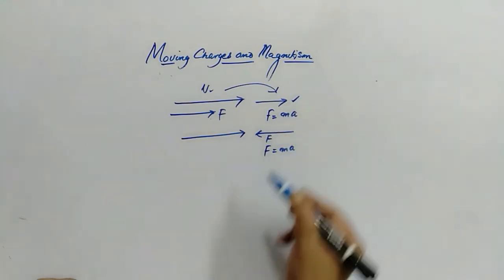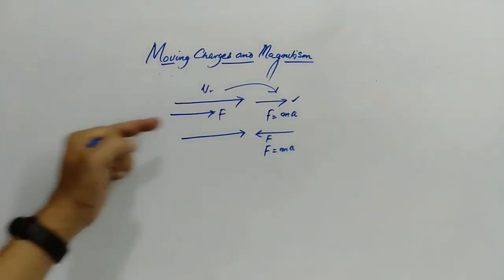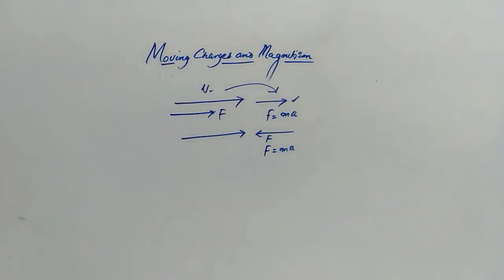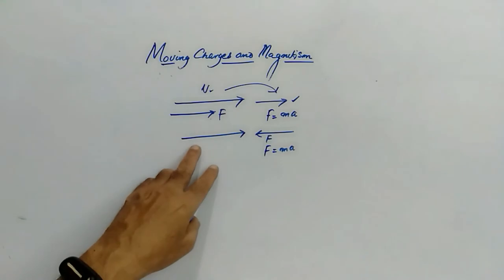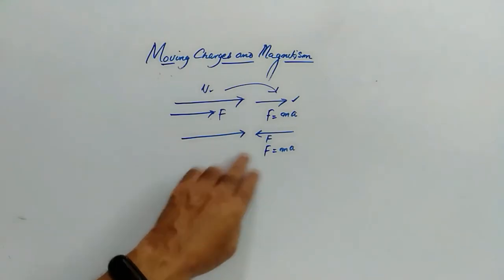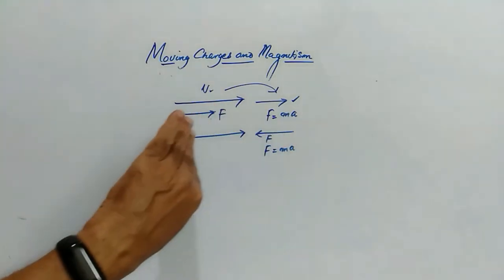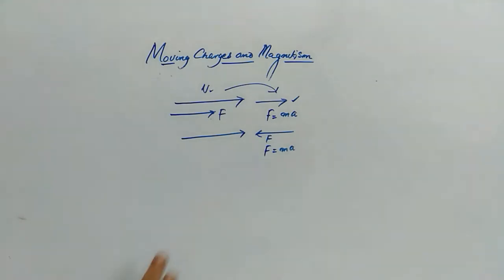For example, when you are cycling in one direction and the wind is also supporting you, your speed will be increased. In the opposite case, when the wind is opposing you, your speed will be reduced.